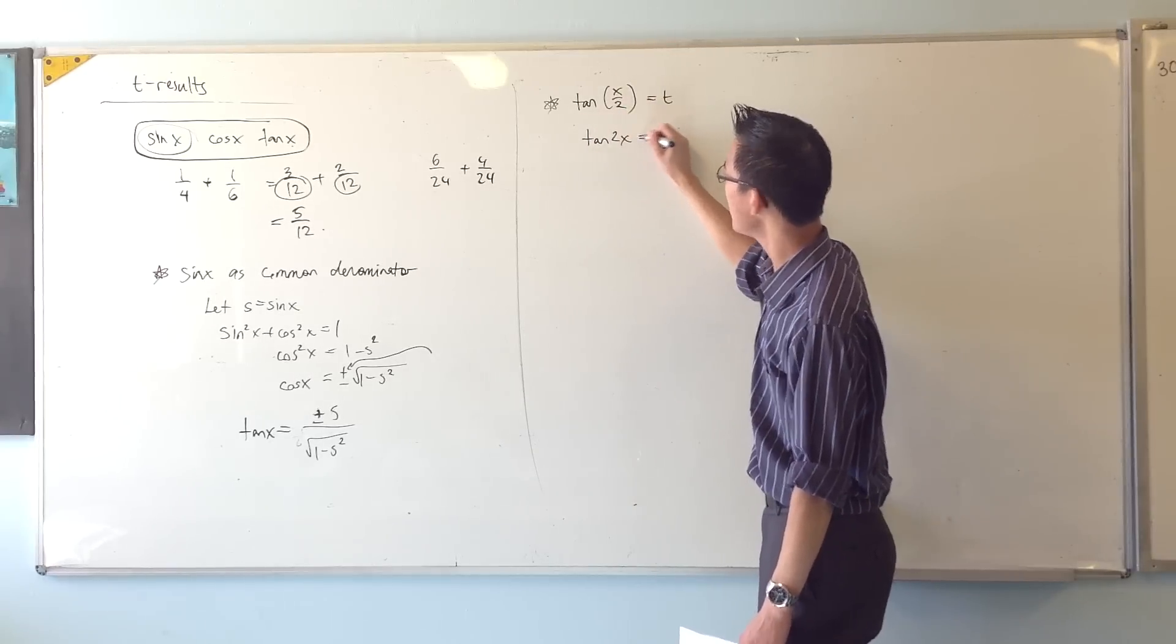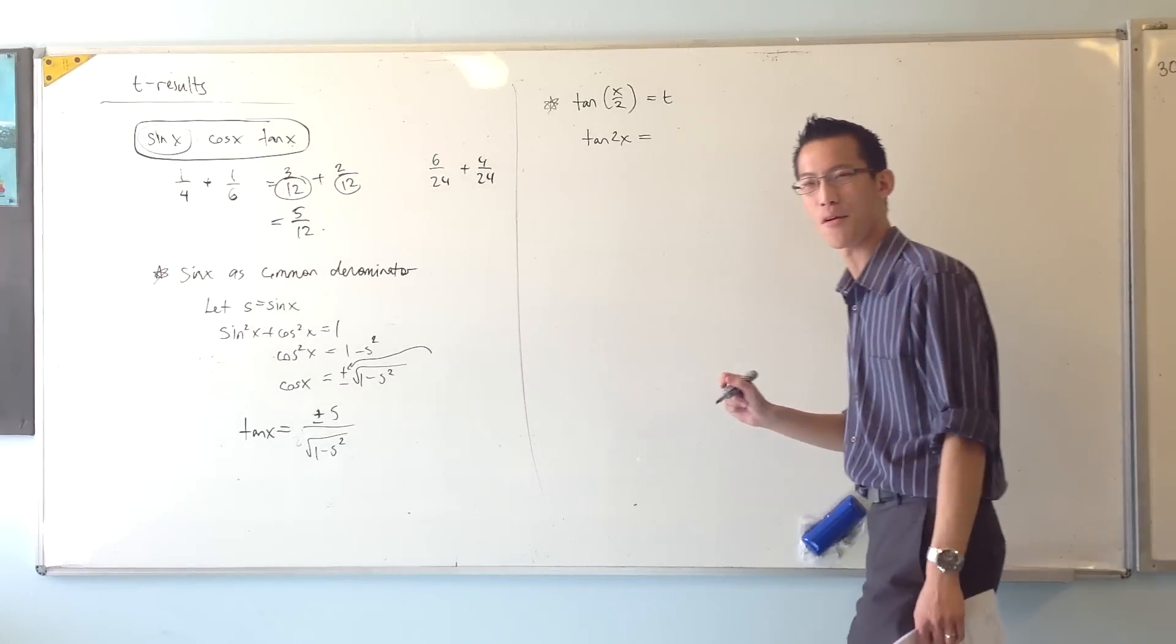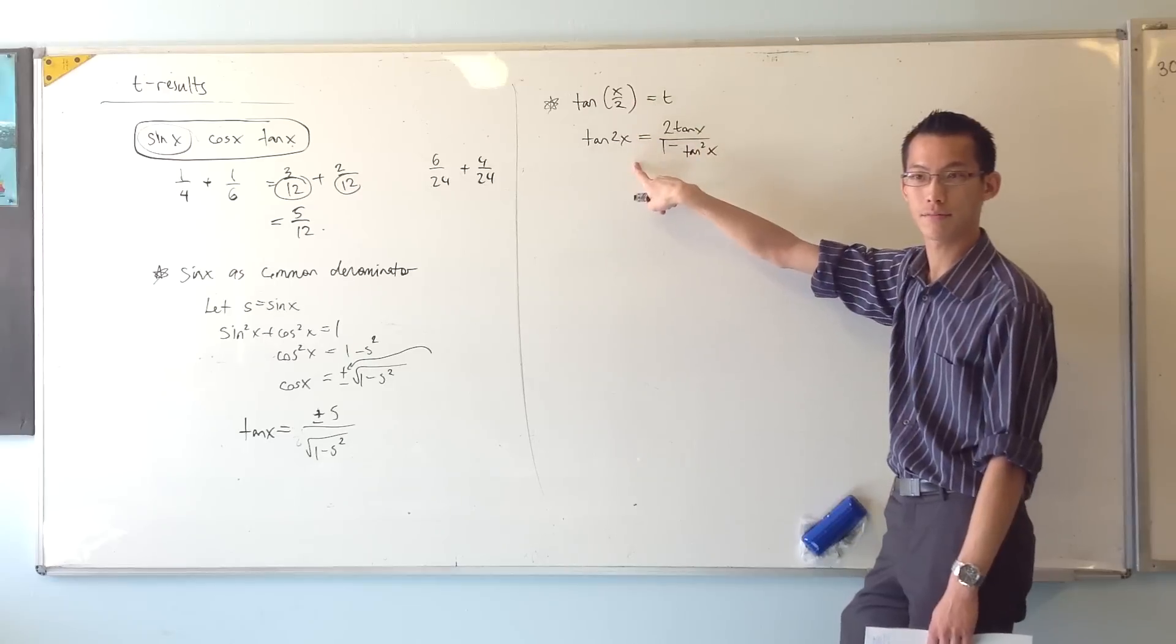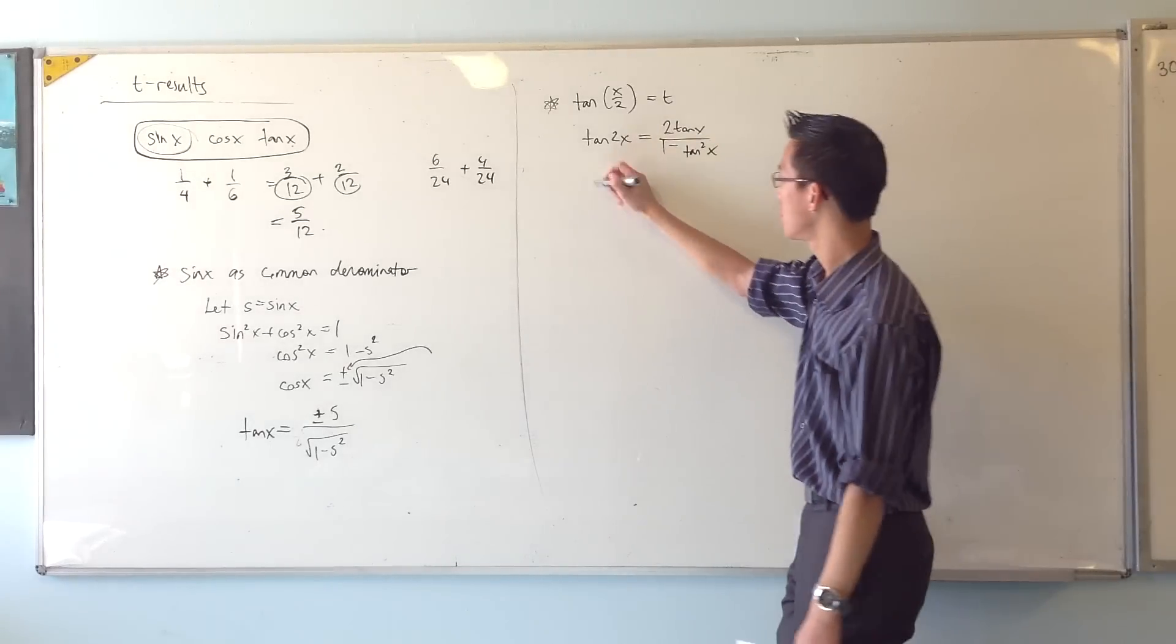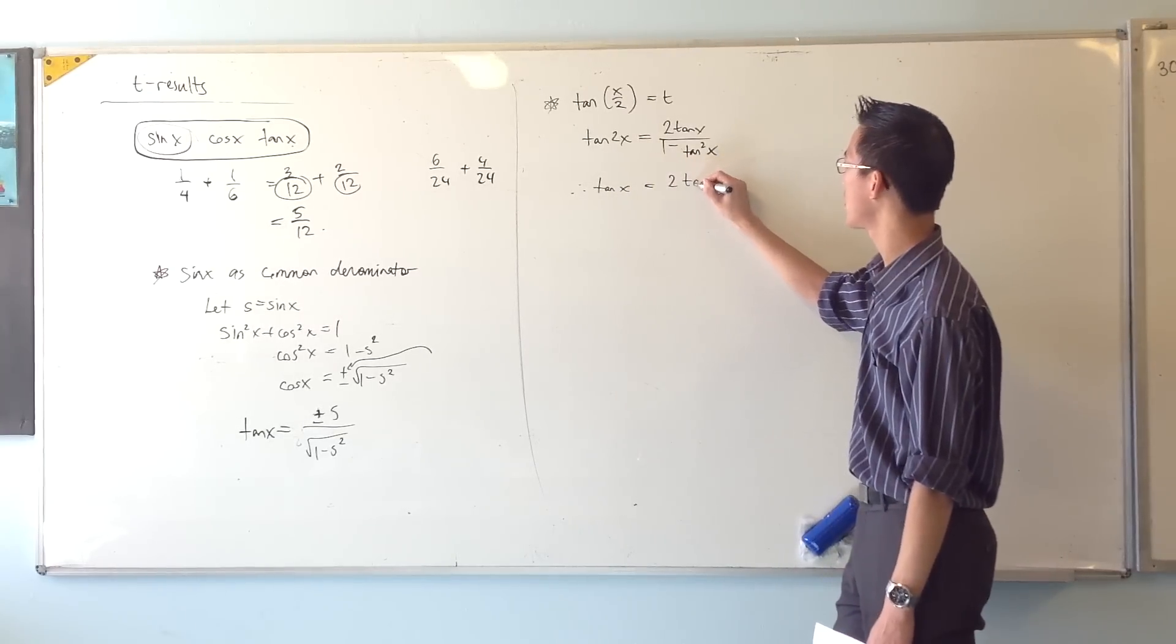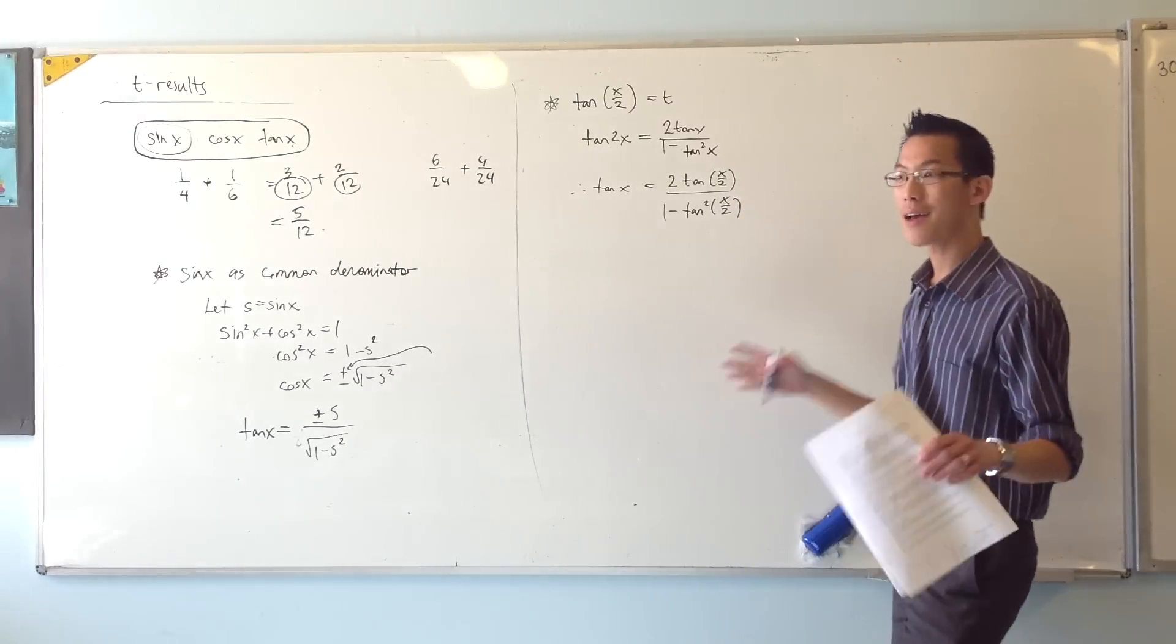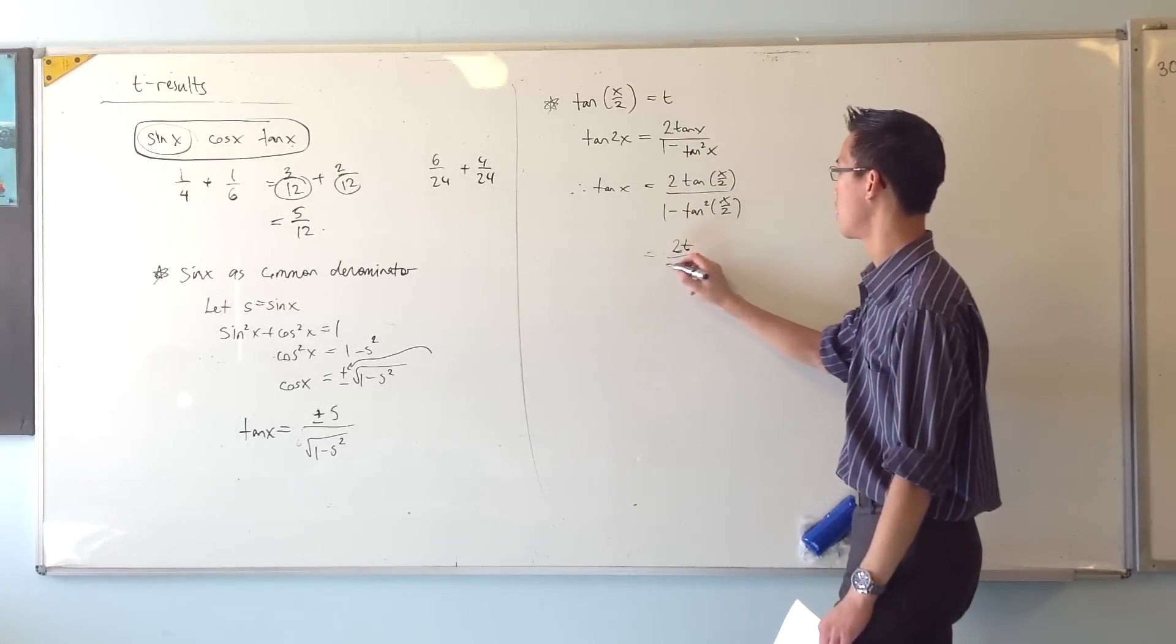So let's see if we can remember. Tan 2x - what's the double angle result, the expansion for tan 2x? It's a fraction. 2 tan x on the top? Yeah, good. Well done. Now if I want to convert from this into something that has half angles instead of double angles, all I have to do is divide all of the angles by 2. So I get 2 tan x/2 on the top, and 1 minus tan squared x/2 on the bottom. Just a straight substitution. So I get 2t on 1 minus t squared.